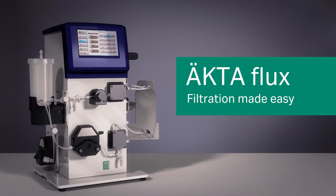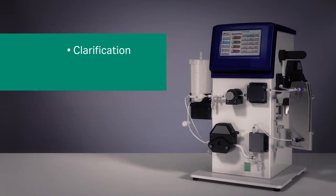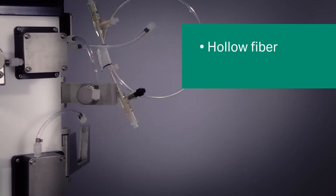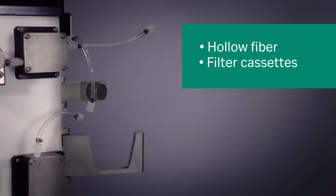Actiflux is an easy-to-use cross-flow filtration system suitable for a wide range of applications such as clarification, concentration, and diafiltration. The system can handle a variety of cross-flow filters, both hollow fiber cartridges and filter cassettes in the ultra and micro filtration ranges.